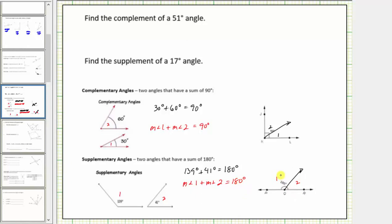Now let's take a look at our two questions. The first question is: find the complement of a 51 degree angle. We know complementary angles must have a sum of 90 degrees, so to model this, let's begin with the right angle and break this up into two separate angles using this ray here. Let's label this angle 51 degrees. The complement would be the measure of an angle so that the sum of the measures equals 90 degrees, which would be this missing angle here.